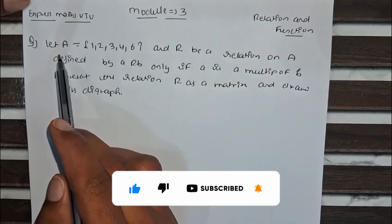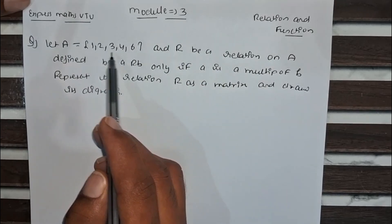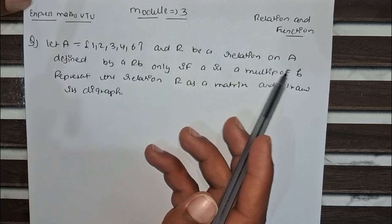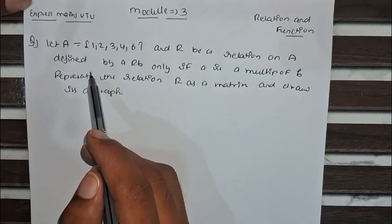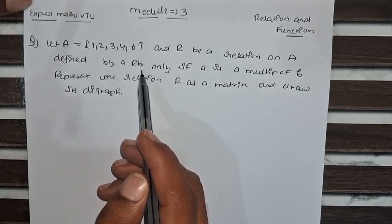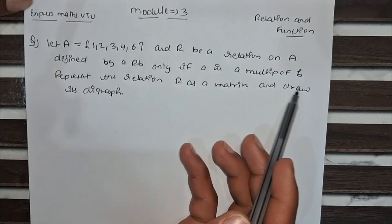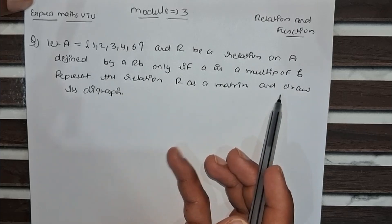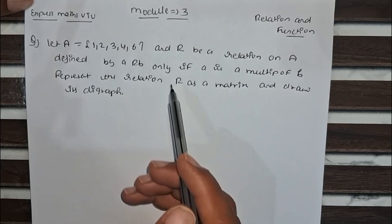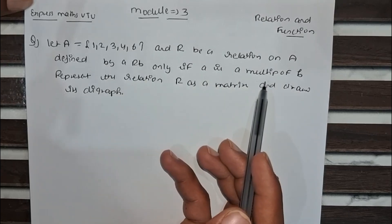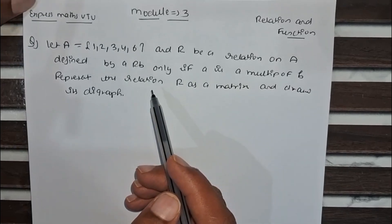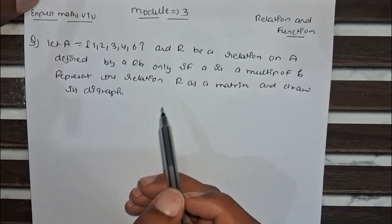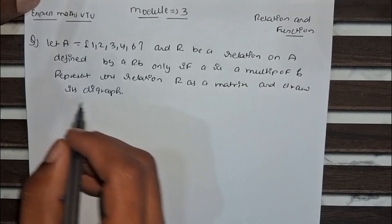The problem is: let A equal to {1, 2, 3, 4, 6} and R be a relation on A defined by a relates to b only if a is a multiple of b. We have to represent the relation R as a matrix and draw its digraph. Here, a is a multiple of b means a should be divisible by b.